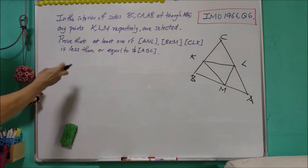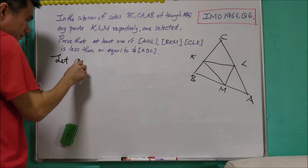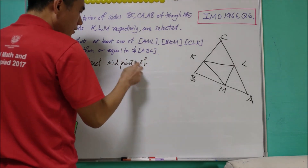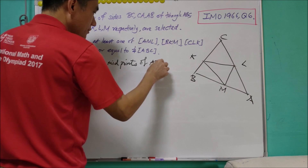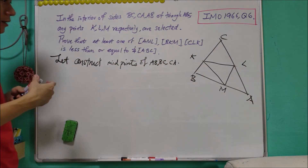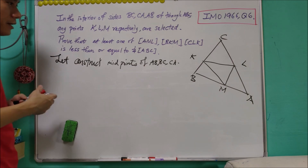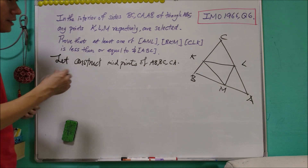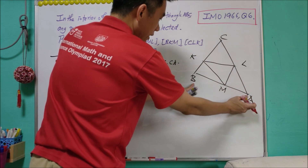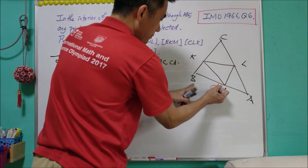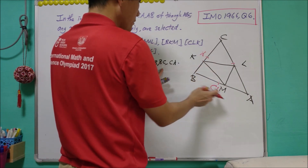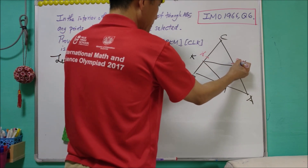Let's construct the midpoints of AB, BC, and CA, and call them C prime, A prime, and B prime respectively. So the midpoint of AB is C prime, midpoint of BC is A prime, and midpoint of CA is B prime.